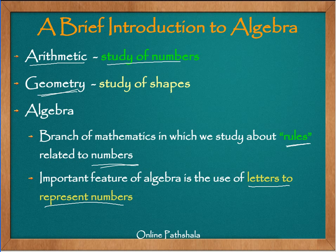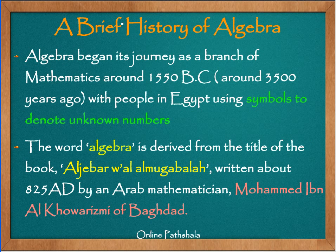Before we do that, let us quickly have a look at when algebra began. Algebra began its journey as a branch of mathematics somewhere around 1550 BC, that is around 3005 years ago. It has been observed that people in Egypt during around this time started using symbols to denote unknown numbers. The word algebra is derived from the title of a book written around 825 AD by an Arab mathematician whose name was Muhammad ibn al-Khawarizmi of Baghdad, and the starting name of the book was Algebra, from which this word has been derived.